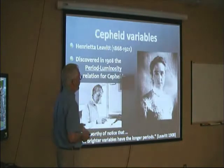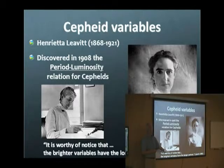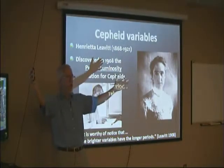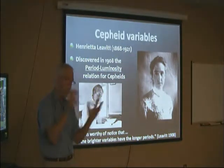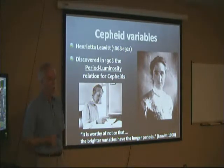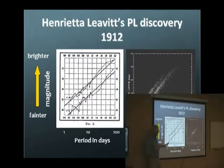The Cepheid variables are incredibly important in astronomy. The importance started a little over 100 years ago with Henrietta Leavitt. She was working at the Harvard College Observatory with photographic plates taken in the southern hemisphere, and she discovered the period-luminosity relationship for Cepheids. She said it's worthy of notice that the brighter variables have the longer period. We now understand the physics — these stars have got sounds in them. The big ones have slow sound speed and a long way for it to travel, so the periods are very long. The smaller ones are the piccolos. You can relate the brightness of the star to the period of oscillation.